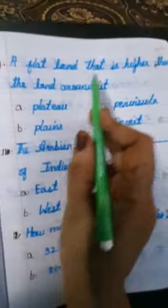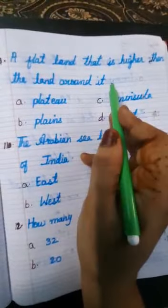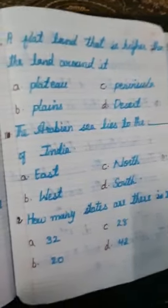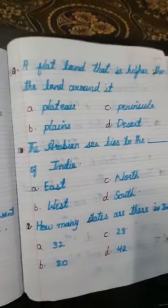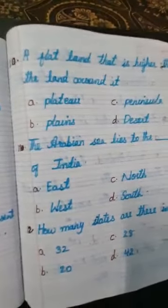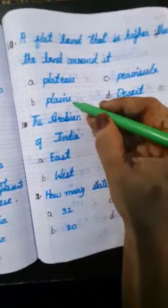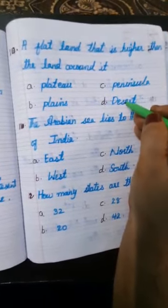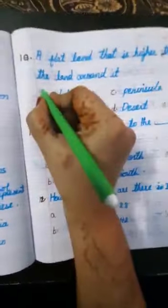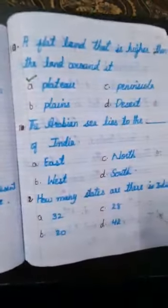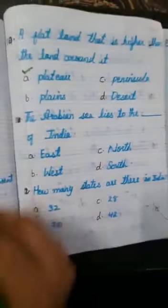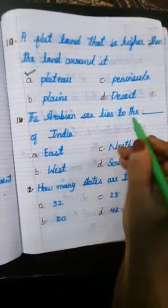Now the 10th one: a flat land that is higher than the land around it. Options are: plateau, peninsula, plains, and desert. The correct answer is plateau.